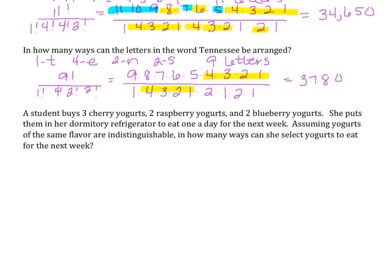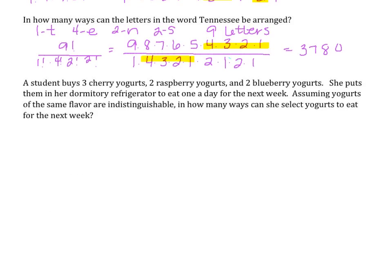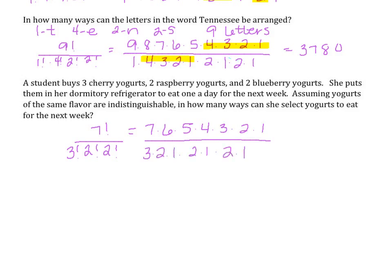Similarly, a student buys 3 cherry yogurts, 2 raspberry yogurts, and 2 blueberry yogurts, putting them in her refrigerator to eat one a day for the next week. Assuming yogurts of the same flavor are indistinguishable, in how many ways can she select yogurts for the next week? She has 7 total, so we do 7 factorial divided by 3 factorial times 2 factorial times 2 factorial. Canceling common terms, 7 times 6 times 5 gives us 210 ways.